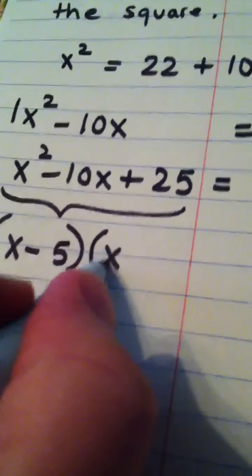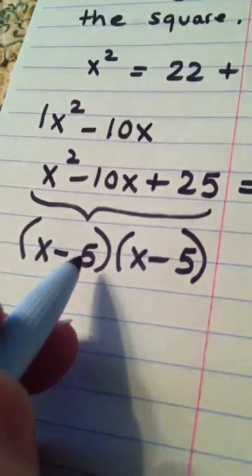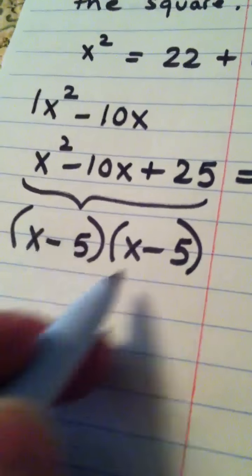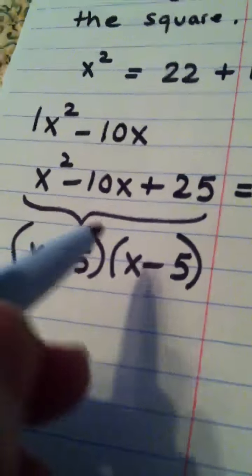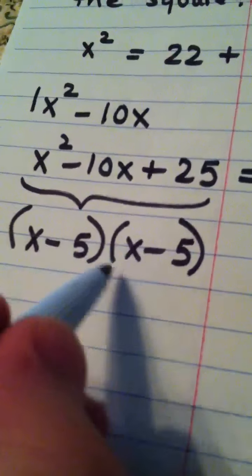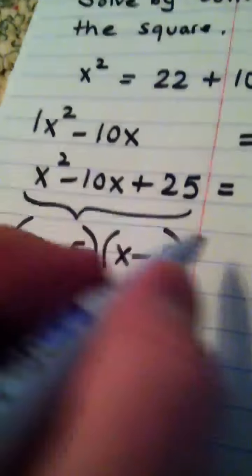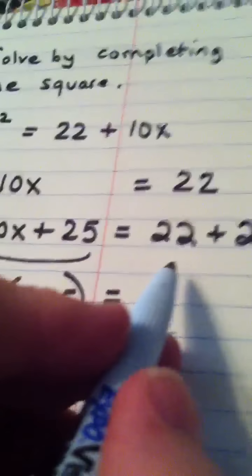x minus 5 and x minus 5. Of course, that middle term you would get by the outer and the inner, or I call it chin and grin. Negative 5x, negative 5x, negative 5x is negative 10x. 22